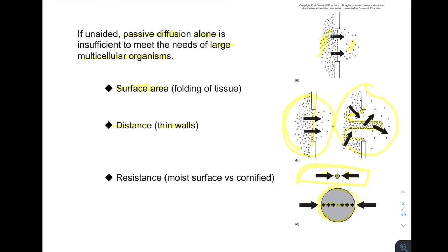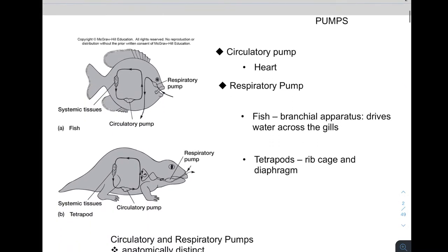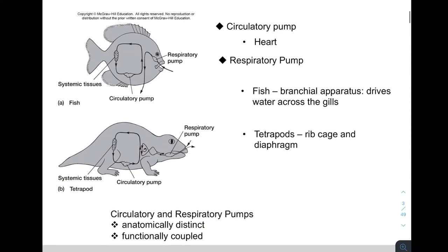Distance is a big factor. Another factor is that fish and amphibians have a moist surface, versus reptiles, mammals, and birds that have a cornified surface — that is also going to be a factor regarding how respiration takes place. In general, we do need pumps that assist this process.